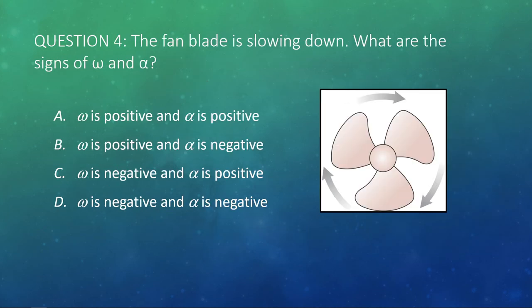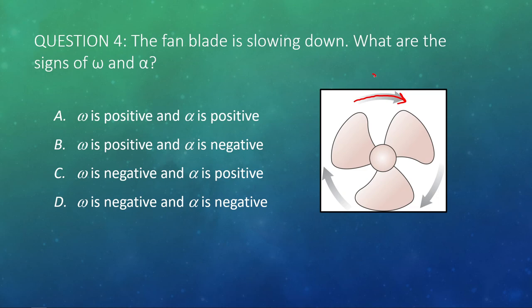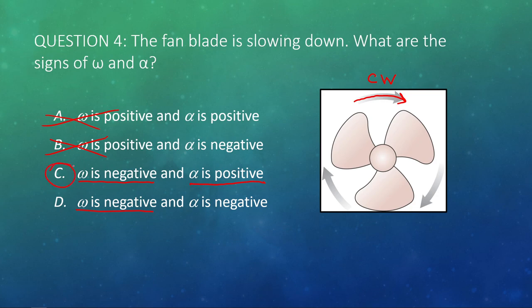The final question: a fan blade is slowing down, and the picture shows which way it's rotating. What are the signs of angular speed omega and angular acceleration alpha? The arrows show the object is rotating clockwise, so omega is negative — this rules out options A and B. We're slowing down, so acceleration points in the opposite direction of motion, meaning alpha is positive. The answer is C.